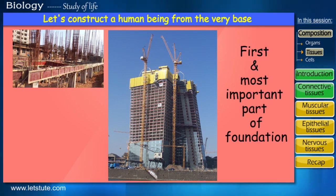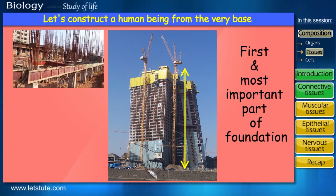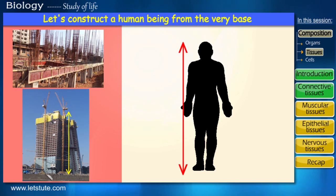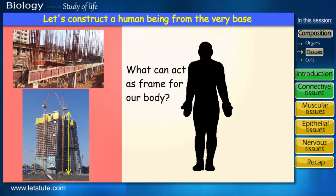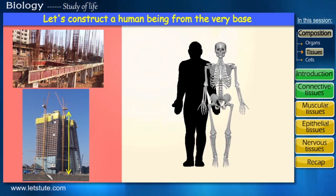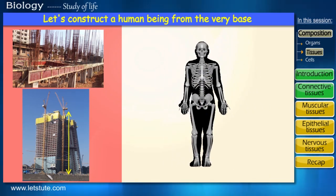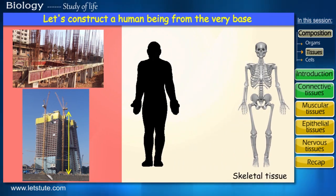These iron rods are the first and most important parts of the foundation, which extend outwards and travel the entire length of the building. Iron is a strong metal which gives the building its particular shape and provides the necessary basic support for addition of further floors and levels. Similarly, we humans spend most of our productive time in an upright position, so we also need a frame that gives both shape and support to our body — and that frame is our bones. They are made up of a strong mineral, calcium, which makes them solid and strong.